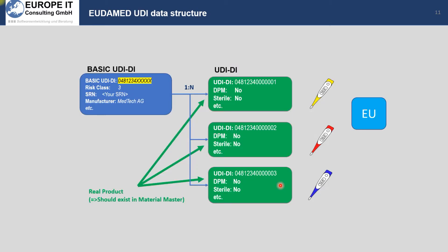The basic UDI data is built as a parent and child data structure. On the left side you have the basic UDIDI, which is like a product family, and on the right side you have your UDIDIs — these are your individual products in your system. For example, a thermometer can exist in different variants like yellow, red, and blue, and you assign each variant to the basic UDIDI product family.